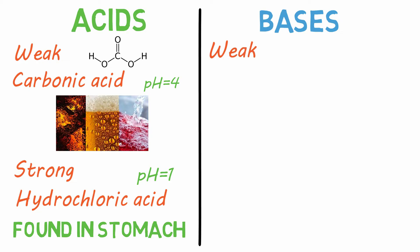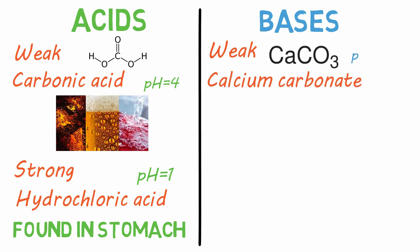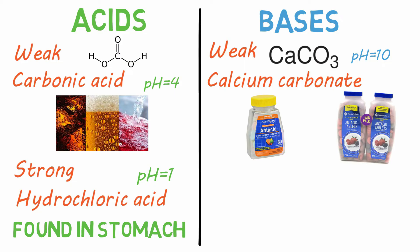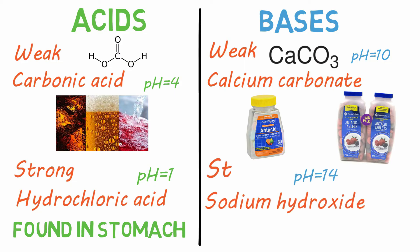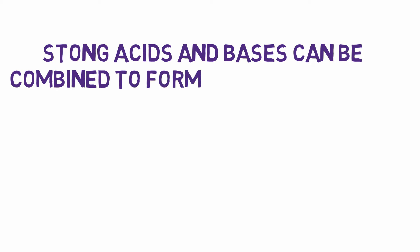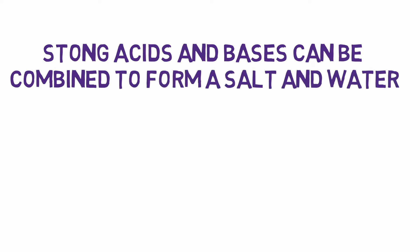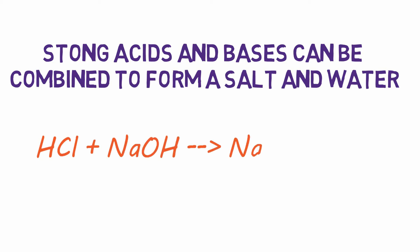An example of a weak base is calcium carbonate, which has a pH of 10 and can be found in antacids. Sodium hydroxide has a pH of 14 and is a strong base and can be found in some drain cleaners. Strong acids and strong bases can be combined to form a salt and H2O. For example, combining hydrochloric acid and sodium hydroxide forms sodium chloride and H2O.